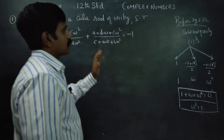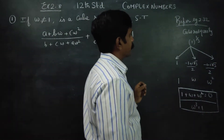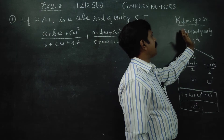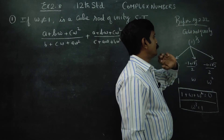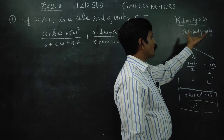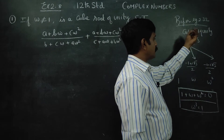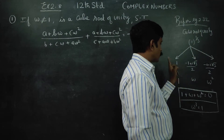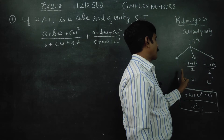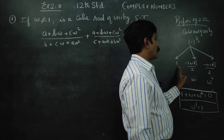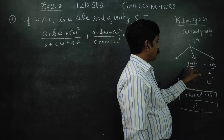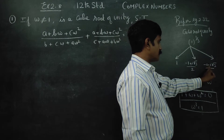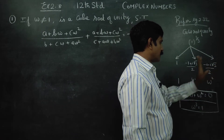To proceed with the sum, please refer to example 2.32. That is a cube root of unity. The cube roots of unity — 1 to the power 1/3 — give answers: 1, minus 1 plus i√3 over 2, and minus 1 minus i√3 over 2.